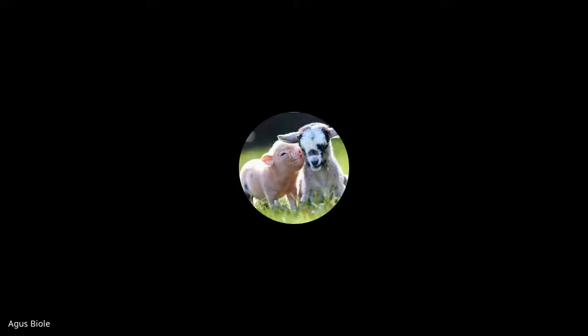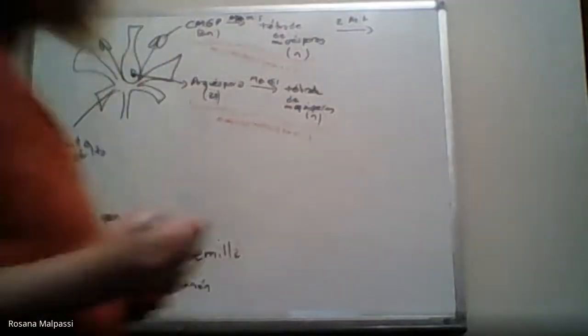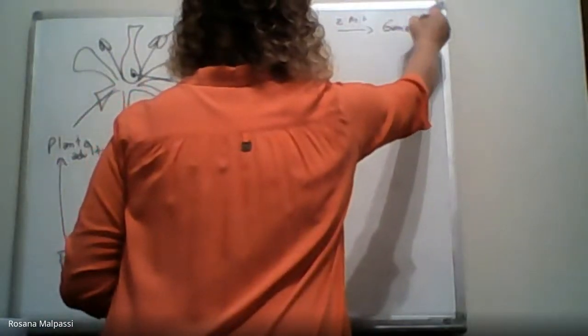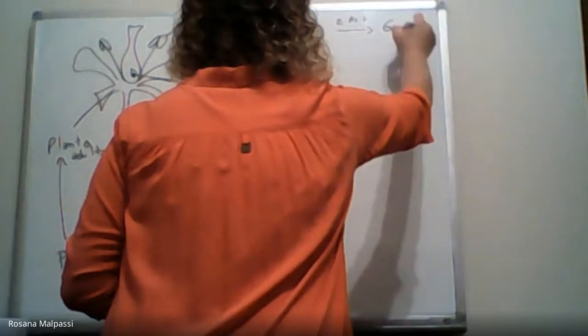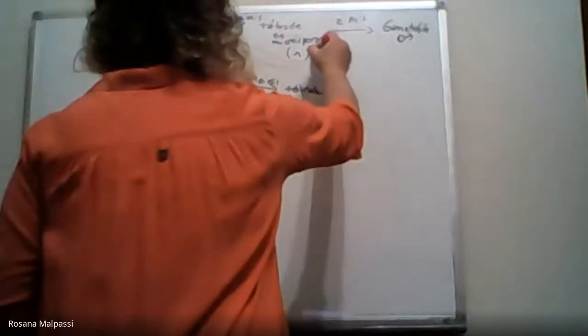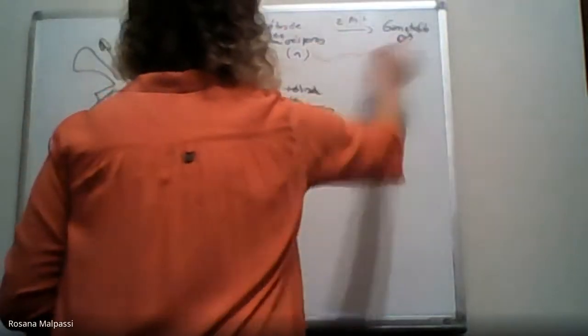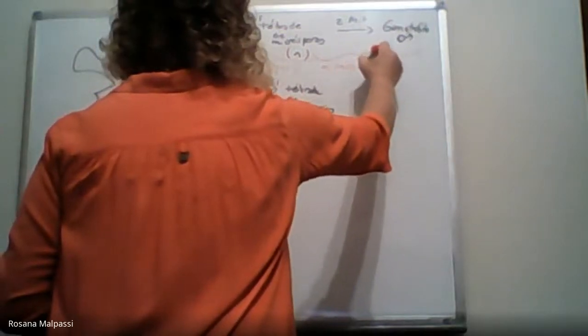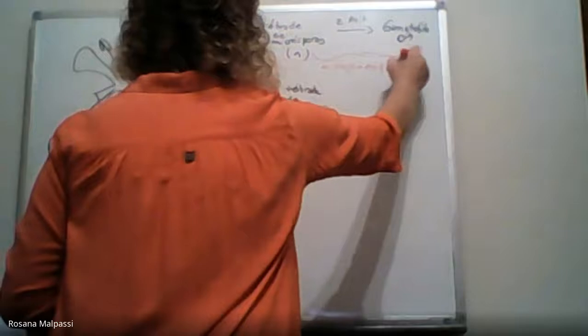Son dos divisiones mitóticas. ¿Cuatro eran, profe? No, eso es gimnospermas. Y van a dar origen al gametofito masculino. Y el proceso, desde las microsporas hasta el gametofito, es la microgametogénesis.